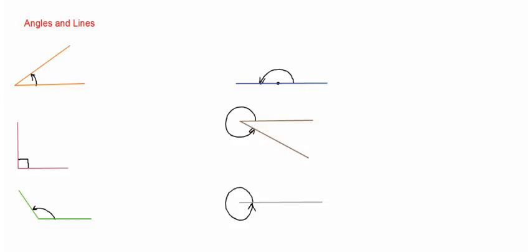We have a look at angles and lines, and for the first one over here, we have an angle over here. Now, when this angle is between 0 and 90, 0 and 90 degrees, we call this angle an acute angle.